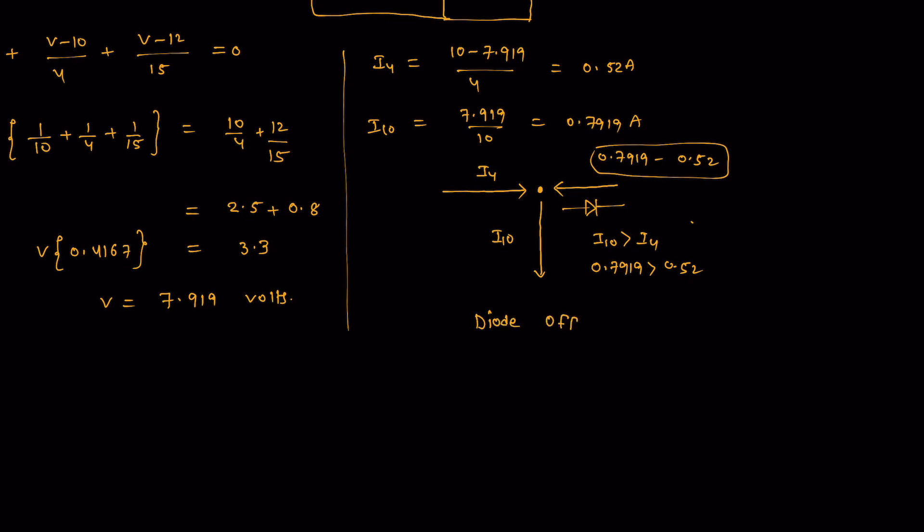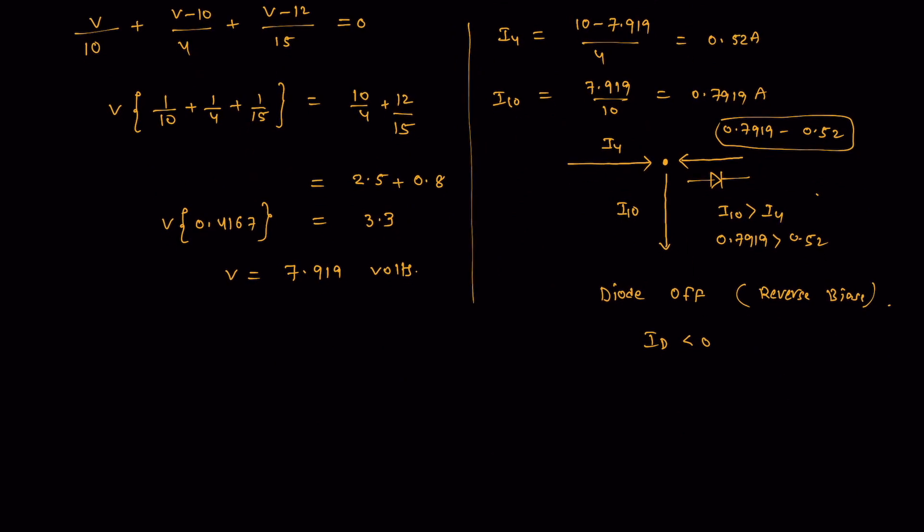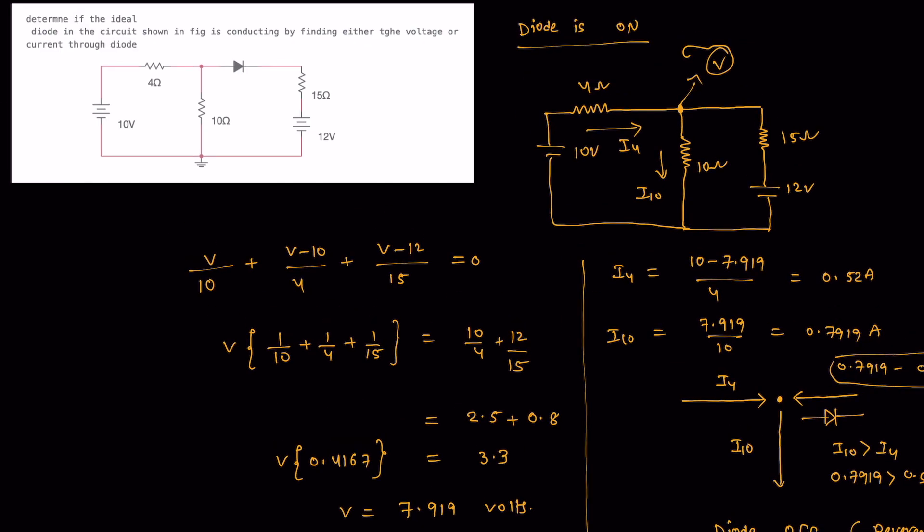Or otherwise it is reverse biased. The reason is ID, the current flowing from anode to cathode, is less than zero, so the diode is off and not conducting. This is a pretty simple problem. Thank you for watching, please subscribe to my channel.